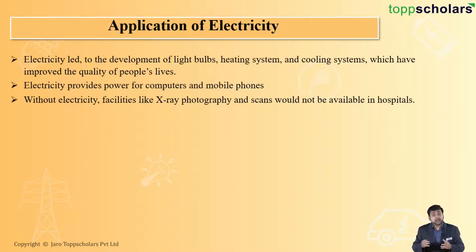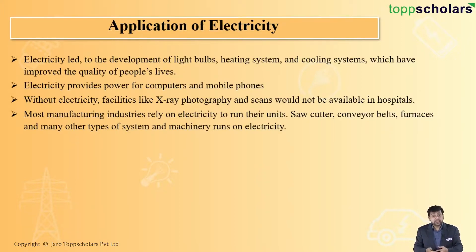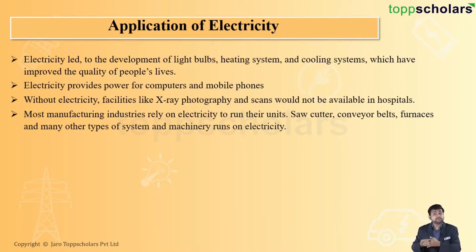It doesn't end there. Manufacturing industries run entirely on electricity — the saw cutter, the conveyor belt, the furnaces — almost every piece of machinery in industry runs on electricity.